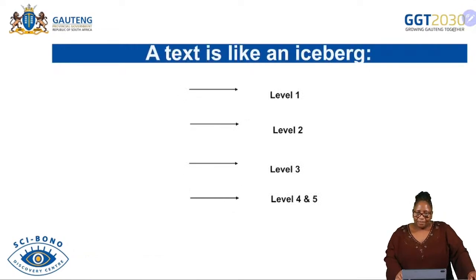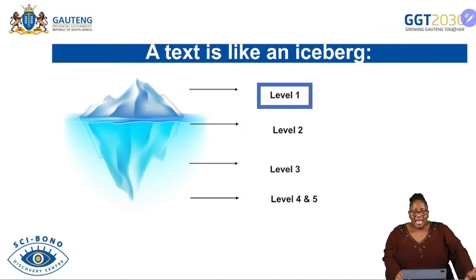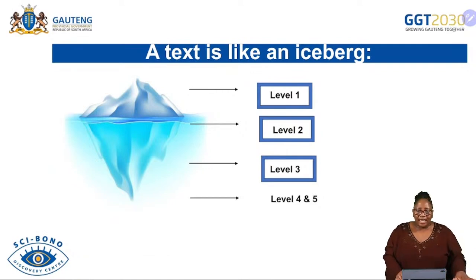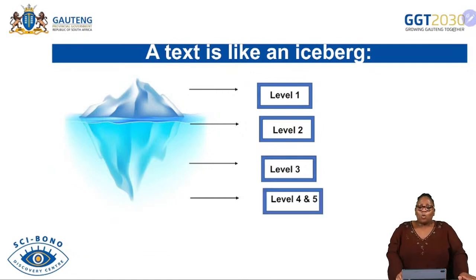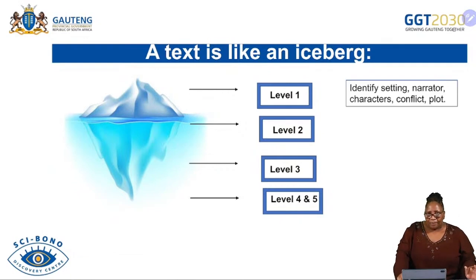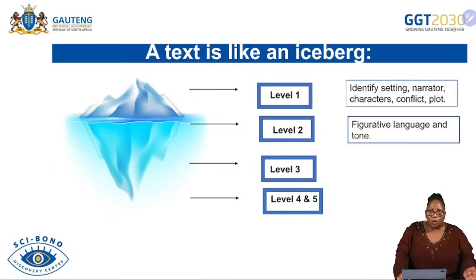When you study literature, every text or extract is like an iceberg. You know what an iceberg is — it's found in the sea, a big mountain-like structure made up of ice. The bottom layer is level 4 and 5, the middle one is level 3, the upper level is level 2, and we have level 1 — that is the one you can see as you approach the iceberg. Level 1 requires candidates to identify the setting, narrator, characters, conflict, and plot in any particular set work — be it drama, novel, short story, or poetry.